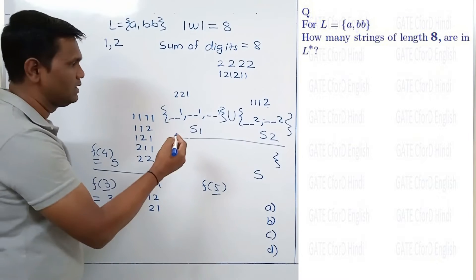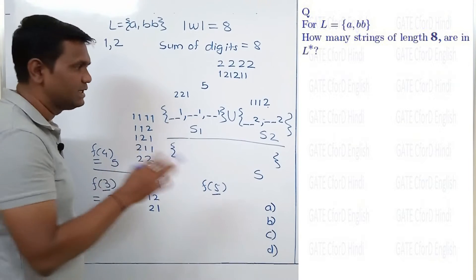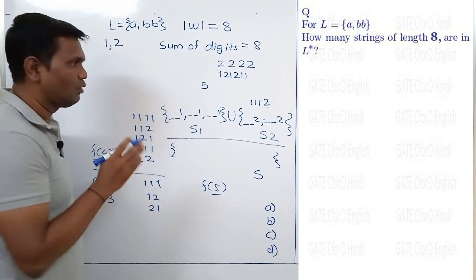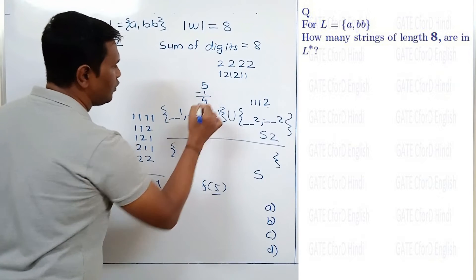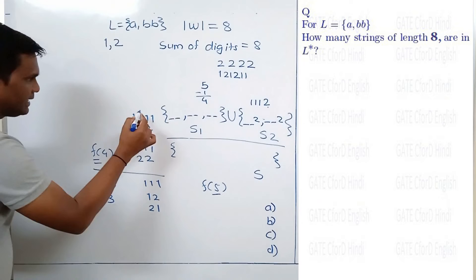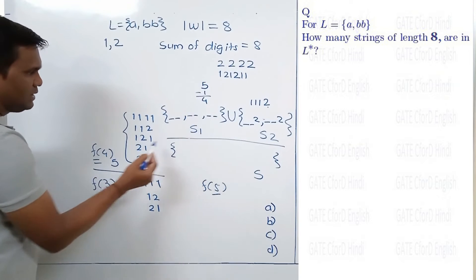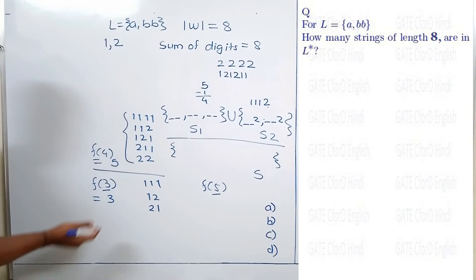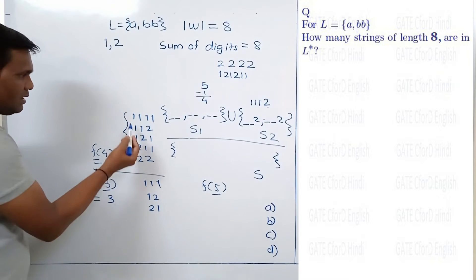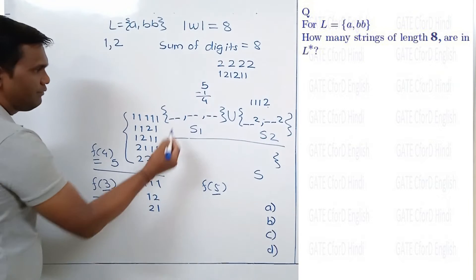Now let's modify each number in S1. In S1, the sum of digits is 5 and the last digit is 1. If we remove the last digit 1 from every number in S1, the sum of digits becomes 4. So if we calculate f(4) — all numbers with digits 1 and 2 summing to 4 — and append 1 to each, we get back the original set S1.